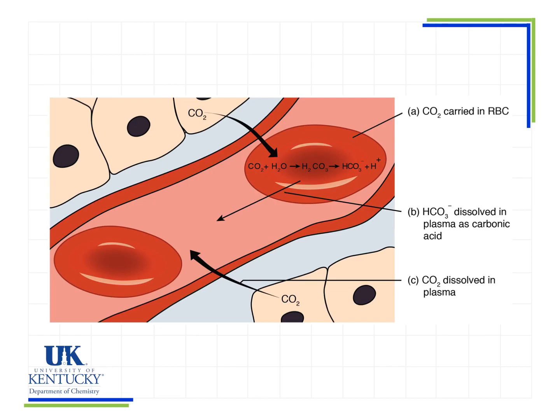An important place where we need buffers is in the blood. We actually maintain a pH of about 7.4 in blood, and that happens through the work of multiple buffers. The most common is our bicarbonate buffer. What that does is maintain this pH — it shifts back and forth, kind of like Le Chatelier's principle, where the reaction shifts between the acid form and its conjugate base form in order to maintain a constant pH.